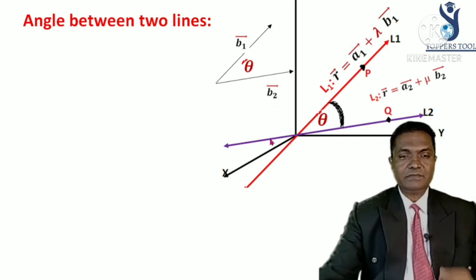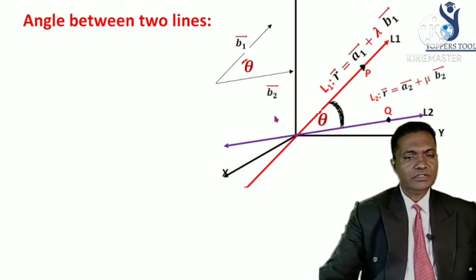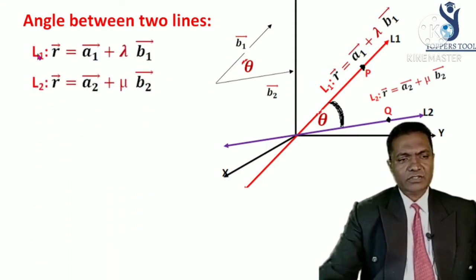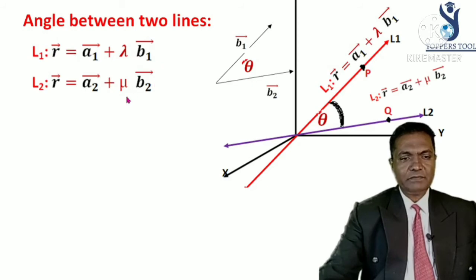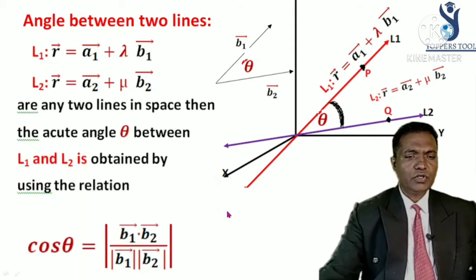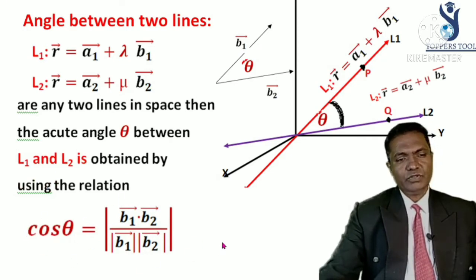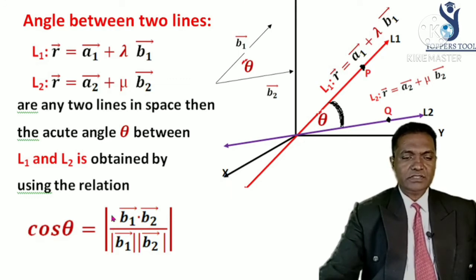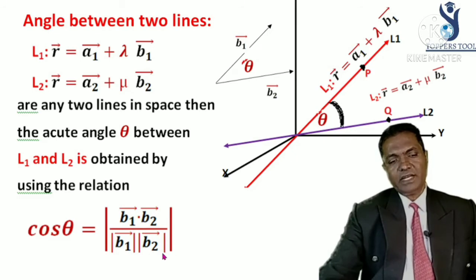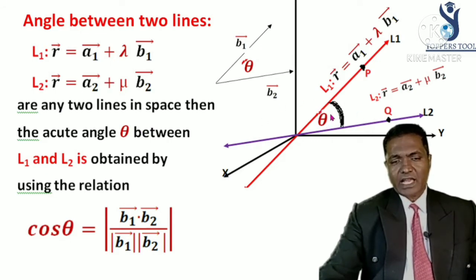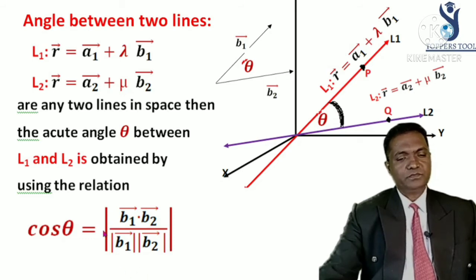In vector algebra, you have studied how to find the angle between two vectors using cosine. The angle between them is given by cos θ = (B1 · B2) / (|B1| |B2|). Since there are two angles between two lines and we want the acute angle, we take the absolute value — the mod of this expression gives the acute angle between the two lines.